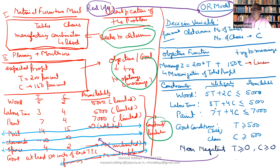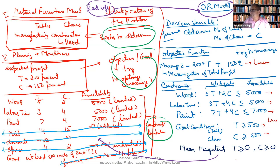In the same manner, if we consider all the constraints and restrictions — this is the first function, the second function, the third function, the fourth, and the fifth function — all are again linear in nature. So this is an important thing: the mathematical functions or the algebraic functions that are to be used, we are using as linear functions only.